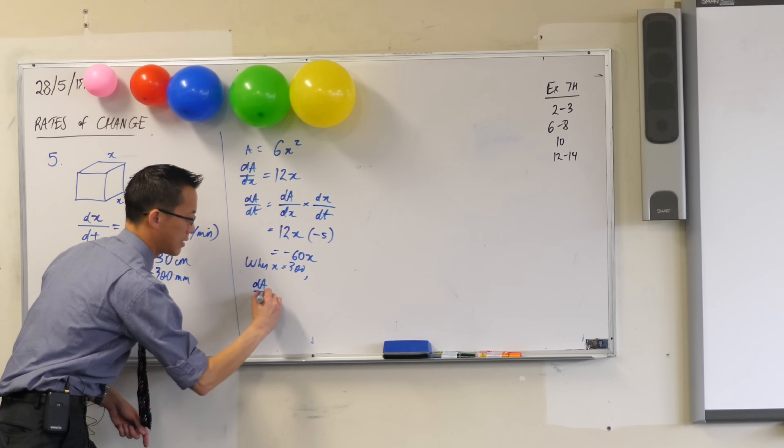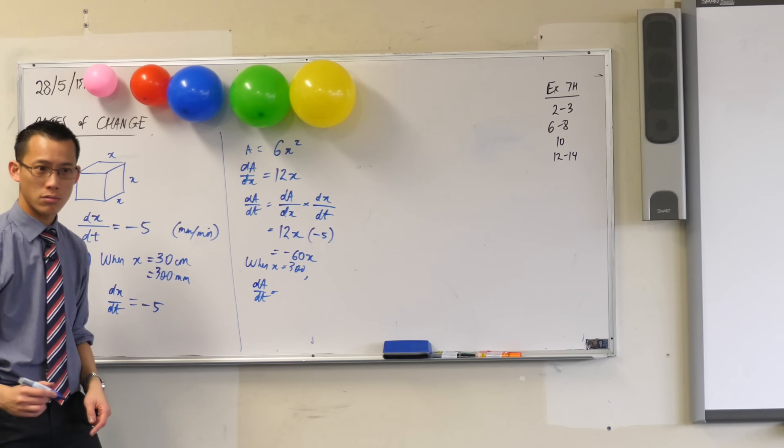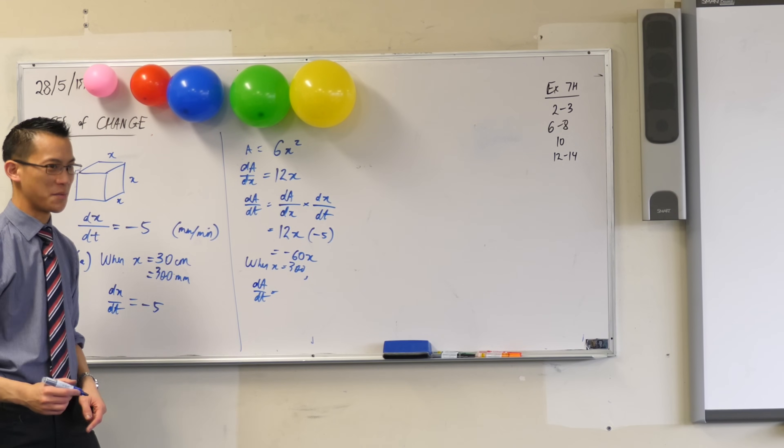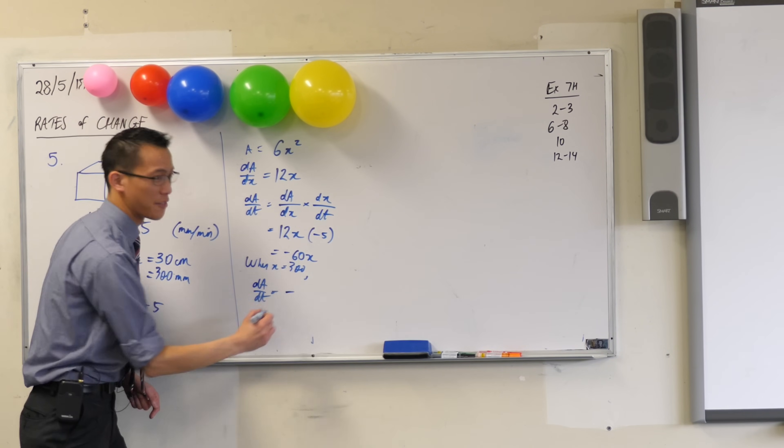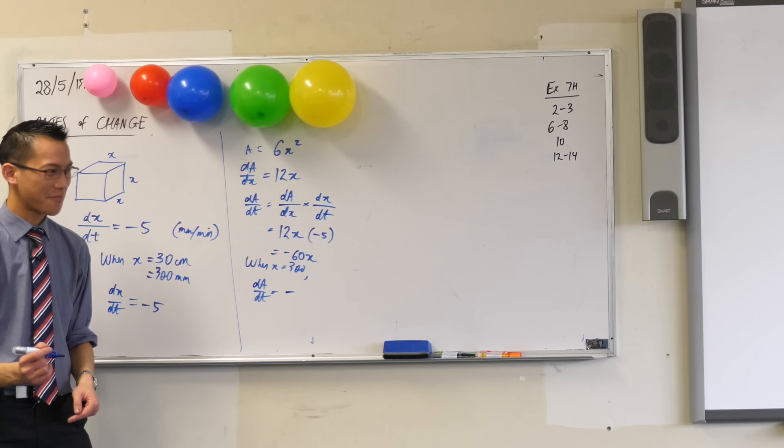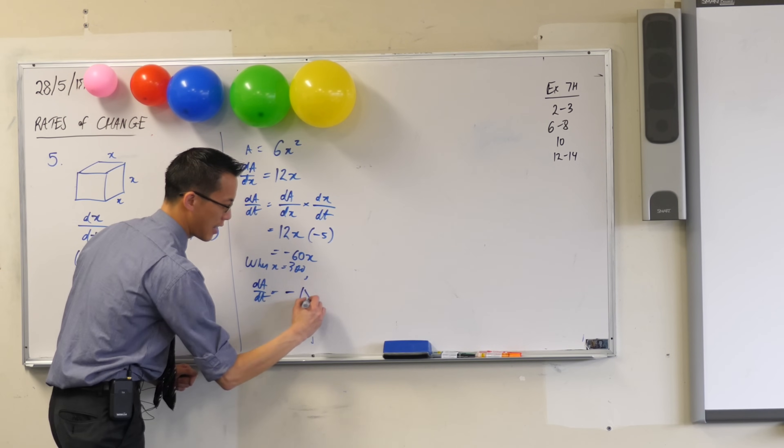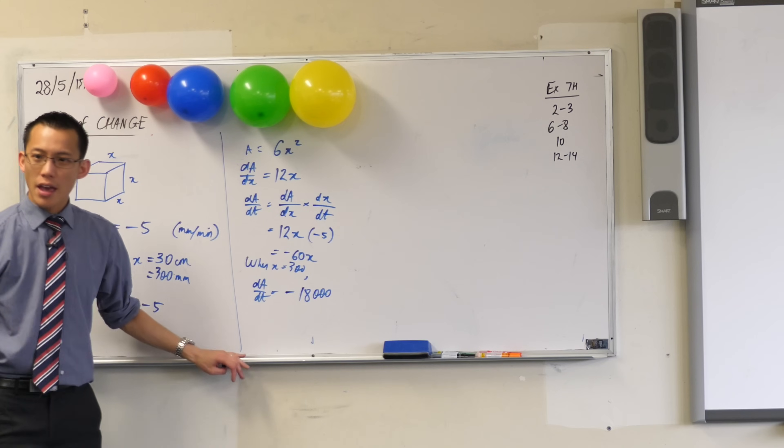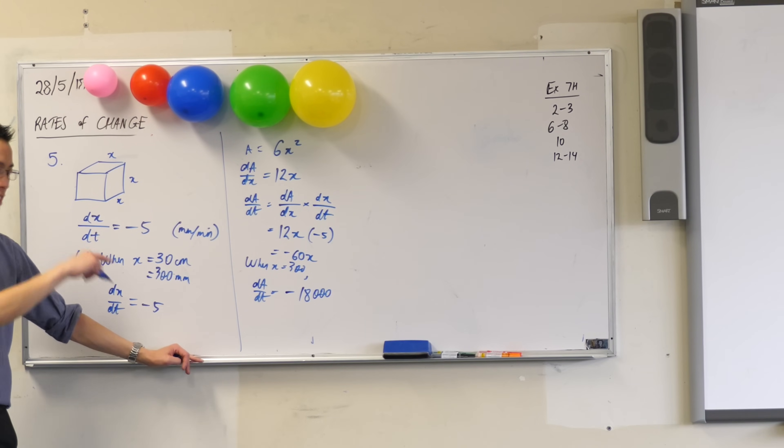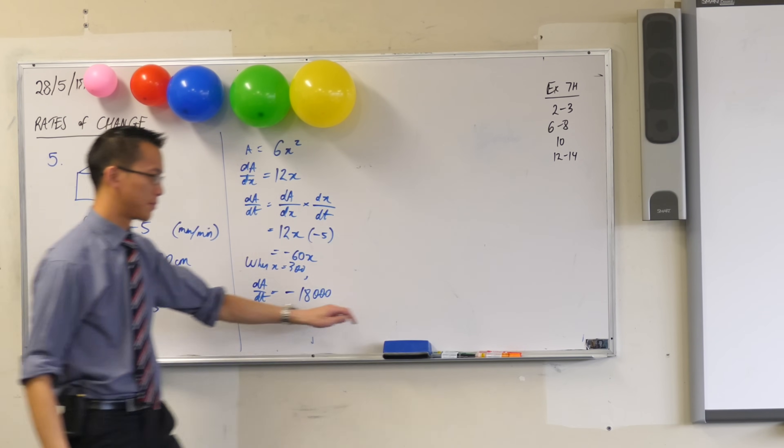dA on dT equals... Can we do the numbers? I think we can do the numbers. I'll give you the minus sign for free. That's how generous I am. 6 times 3 is 18. How many zeros am I going to write on the end? Three of them. 1, 2, 3. Now, at this point, I'm going to give you a suggestion.